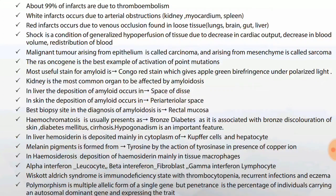Most useful stain for amyloid is Congo red stain, which gives apple green birefringence under polarized light. Kidney is the most common organ to be affected by amyloidosis. In liver, deposition of amyloid occurs in the space of Disse. In skin, deposition of amyloid occurs in periarteriolar space. Best biopsy site for diagnosis of amyloid is rectal mucosa.